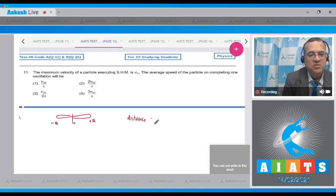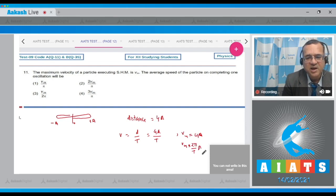What is the distance covered? The distance covered is equal to 4a. What is the average speed? Total distance divided by the time. The distance is equal to 4a divided by the time. The maximum velocity of the particle Vm is equal to omega into a.